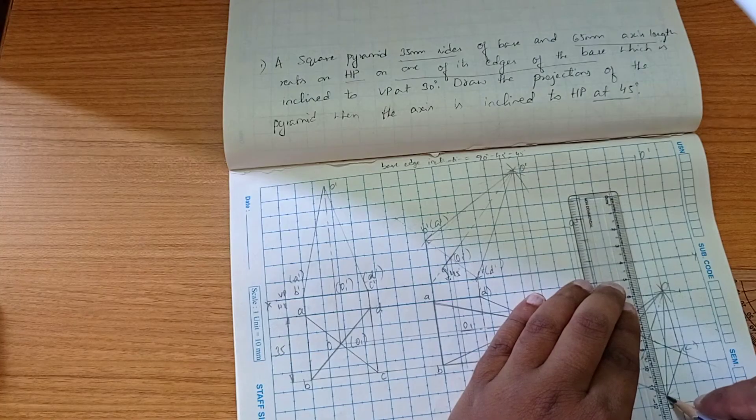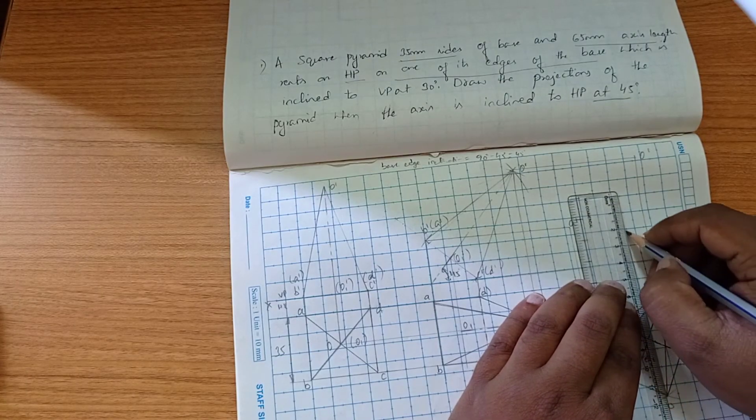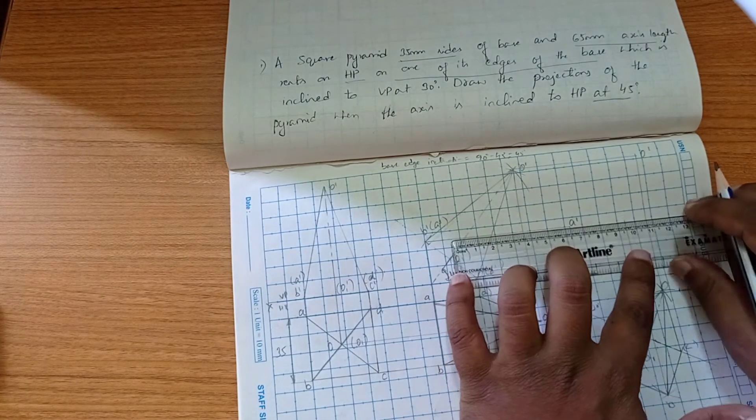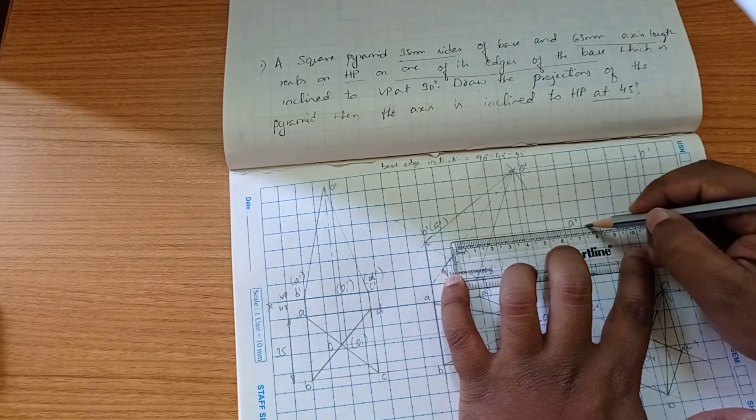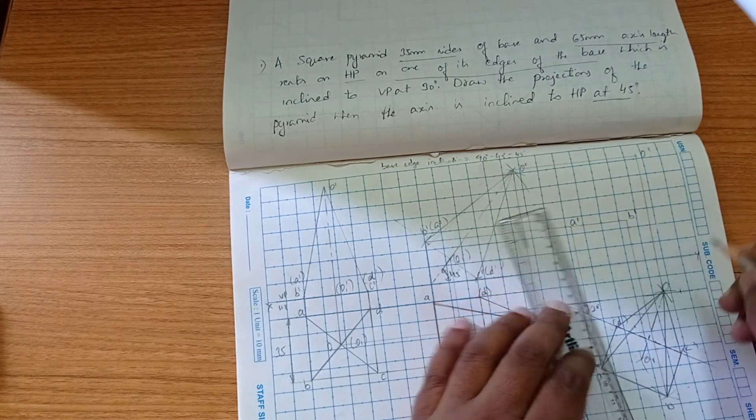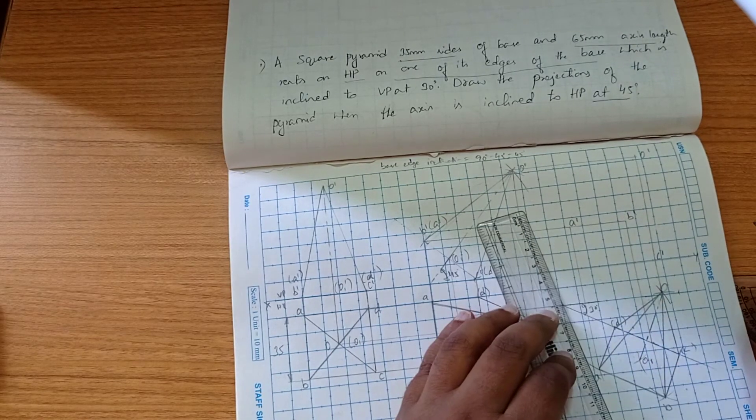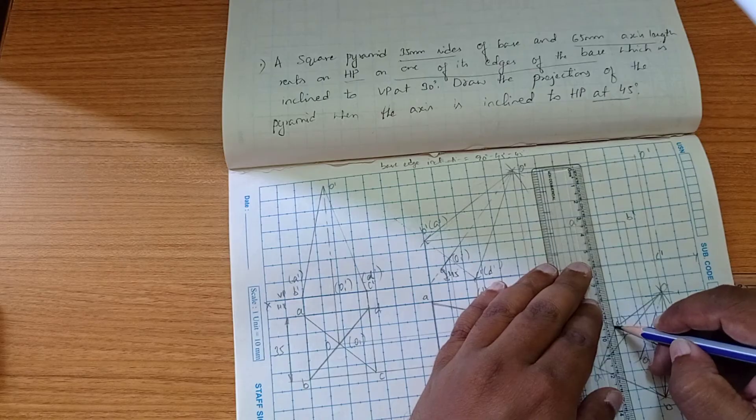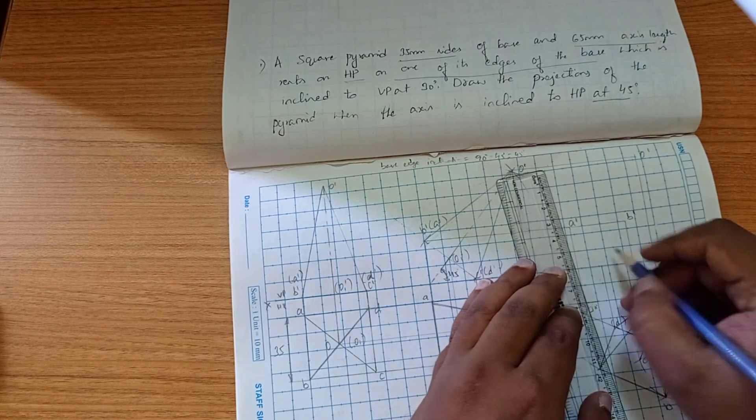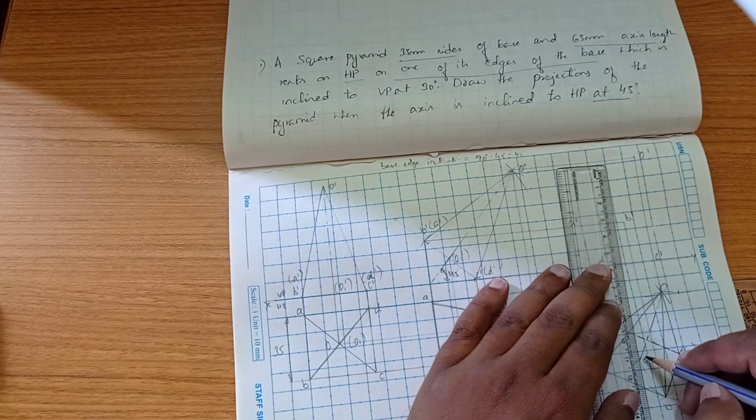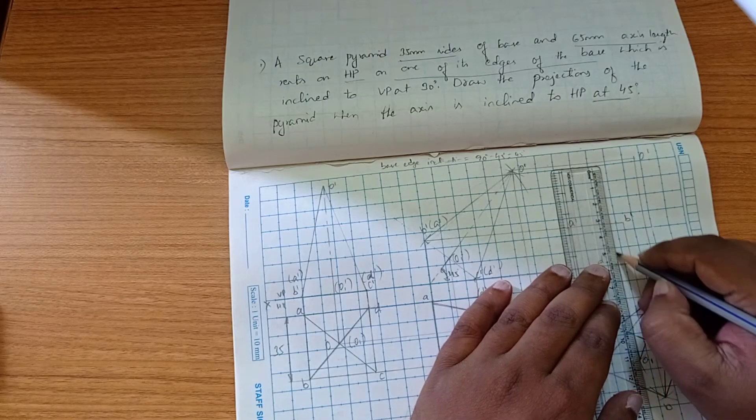This is B dash, this one is C dash and D dash. Finally we have V dash.